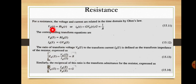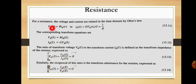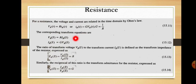Since we are representing it in the time domain, we include the term t: Vr(t) = R × ir(t), where the suffix r represents the resistor. Similarly, we can write ir(t) = Vr(t) / R. We know that 1/R equals the conductance G, so ir(t) = G × Vr(t), where G = 1/R. This is equation 15.11.